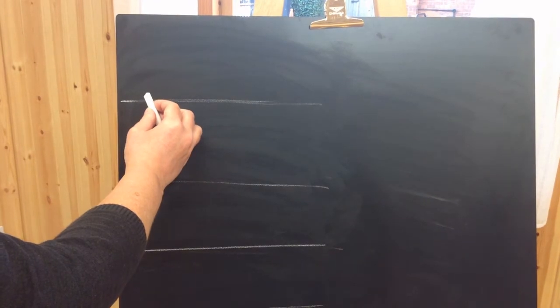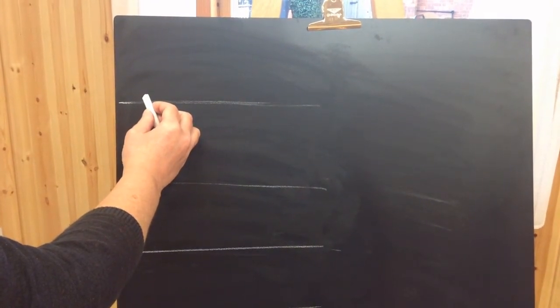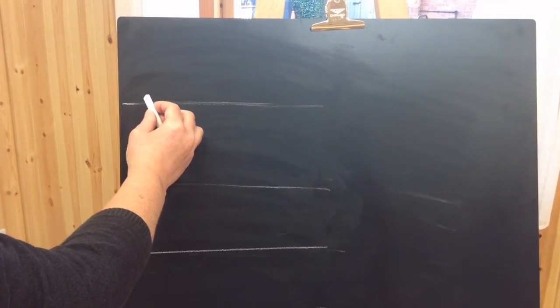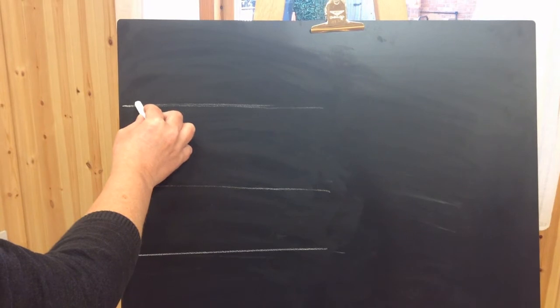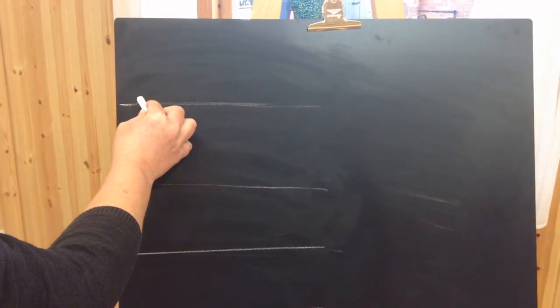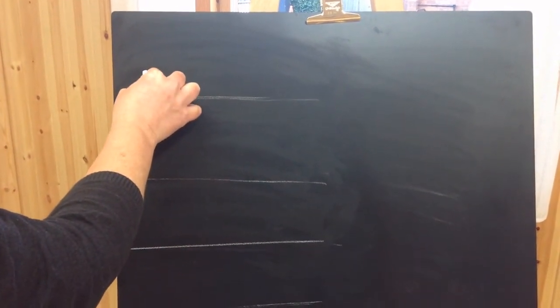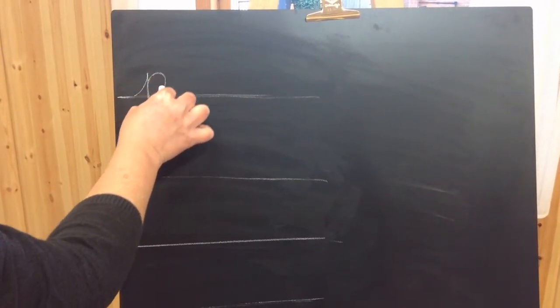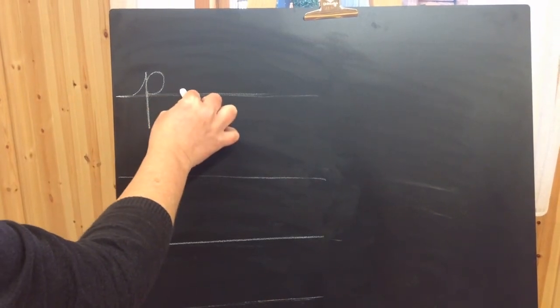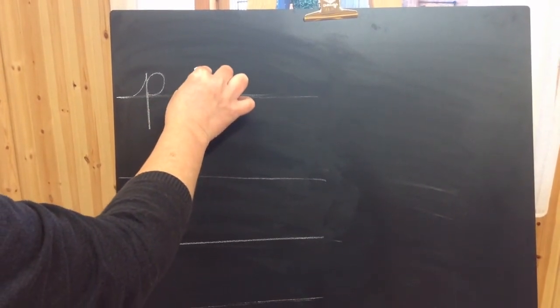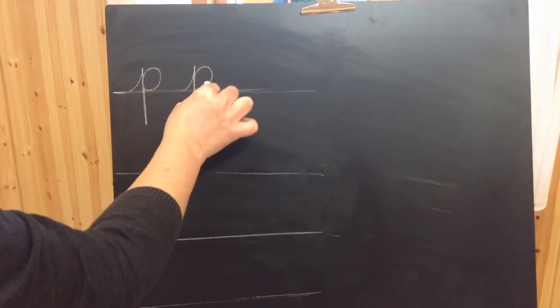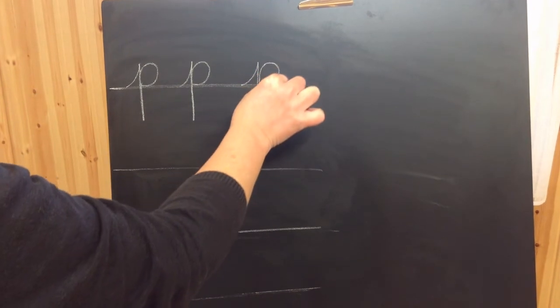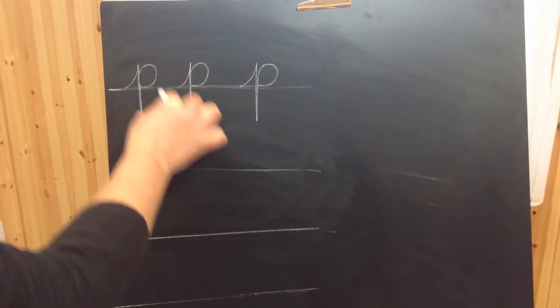We're now going to write P, J and S, three completely different letters. The formation is entirely different. P starts on the line, moves as if it's a small letter with its lead in and then needs to hang under the line before the children go back up and round. A lot of children struggle with making that P sit under the line, so practice this a lot to get them to make sure the body of the P sits on the line and it has the hanging part.